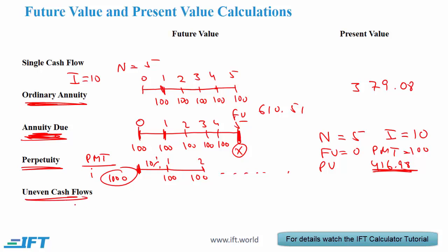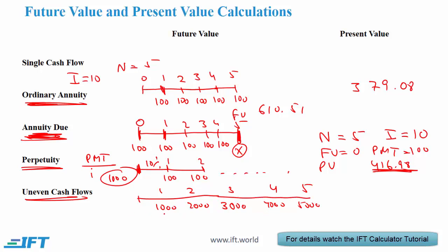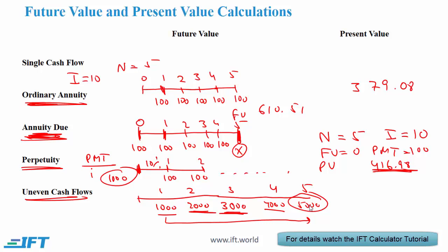And finally we have uneven cash flows. Let's say we receive $1,000 at the end of year 1, $2,000 at the end of year 2, $3,000 at the end of year 3, $4,000 at the end of year 4, and $5,000 at the end of year 5. For present value, you take the present value of each of these cash flows and then add the five numbers. For the future value, you take each number and compound it forward: take $1,000 and compound it forward four periods, then take $2,000 and compound it forward three periods, and so on. The $5,000 is received at the end of year 5 so we don't need to compound it. Then add all five numbers.